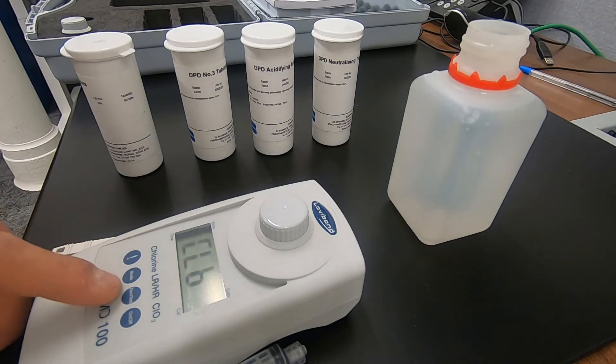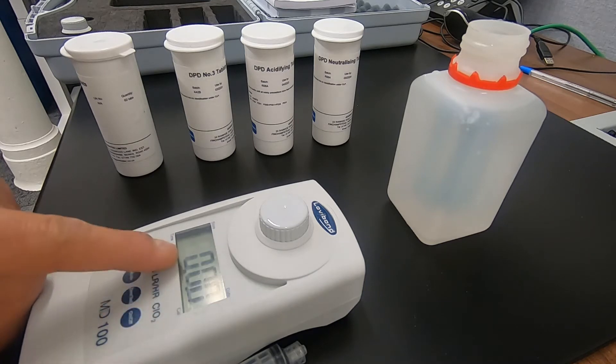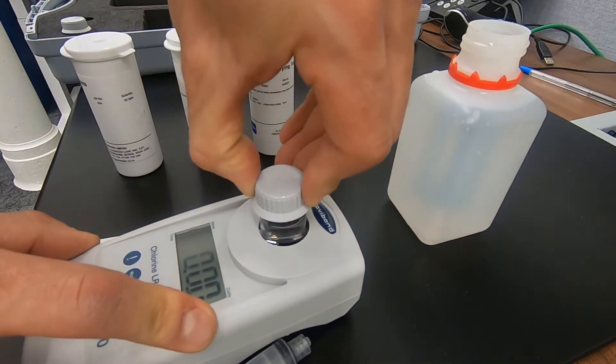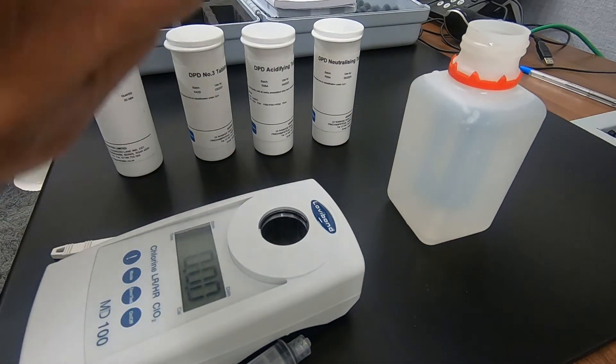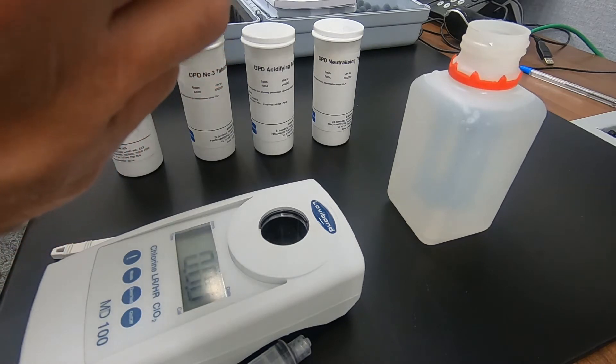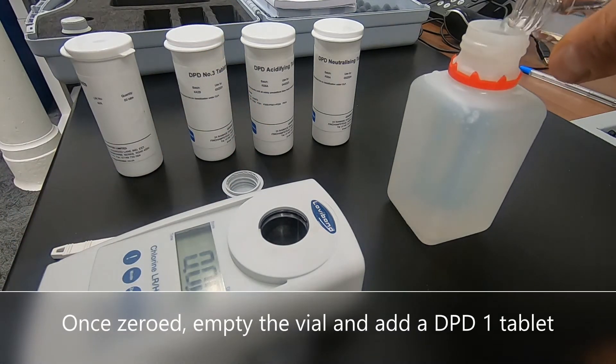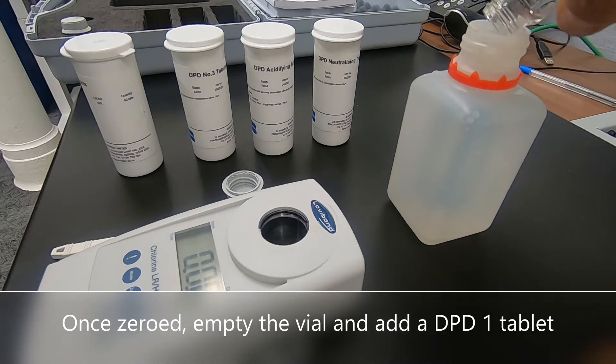The photometer will now blank the sample and once we get the not not reading we take that sample of water from the vial and we empty the vial out. Now you would normally empty this out in a bucket but for demonstration purposes we can put this back in here.